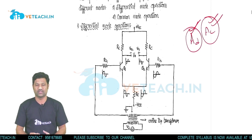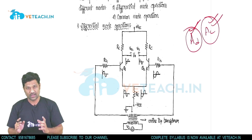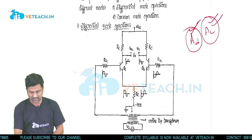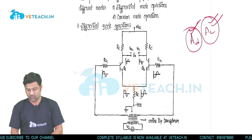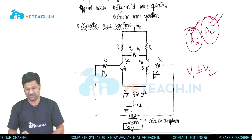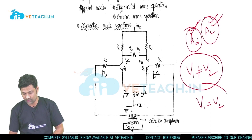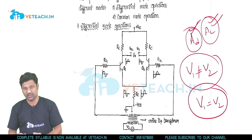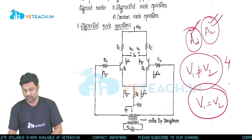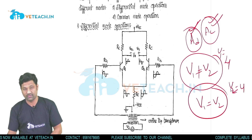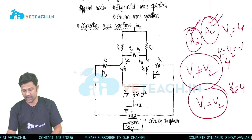Differential mode operation means the circuit receives two different input signals, so V1 should not be equal to V2. We say V1 equals V2 only when both the magnitude and phase of V1 and V2 are equal. For example, if V1 is 4V and V2 is also 4V, then V1 equals V2. But if V1 is 4V and V2 is minus 4V, we cannot say V1 equals V2.